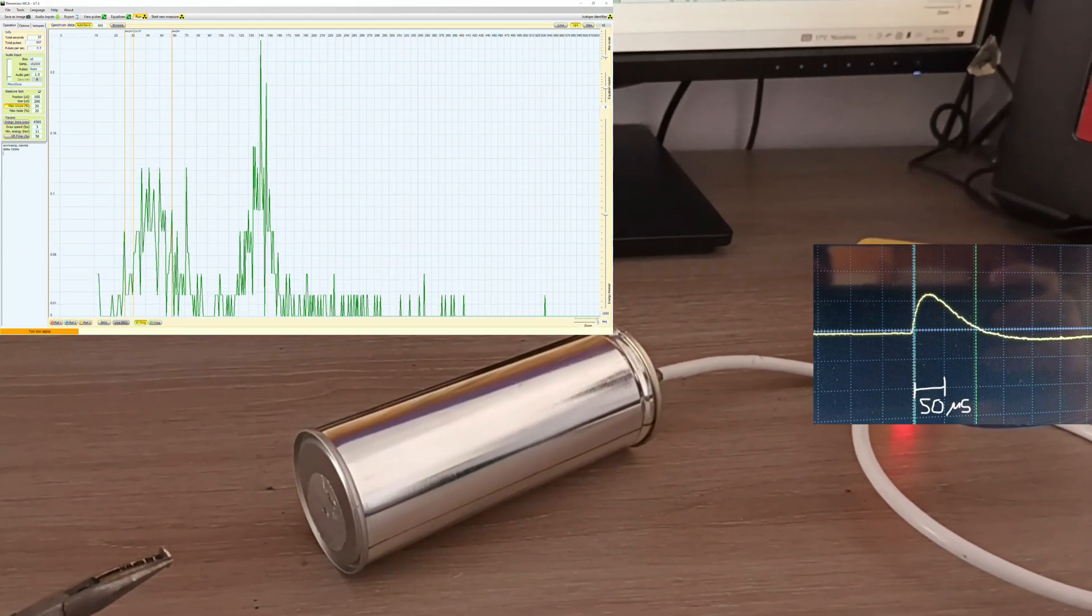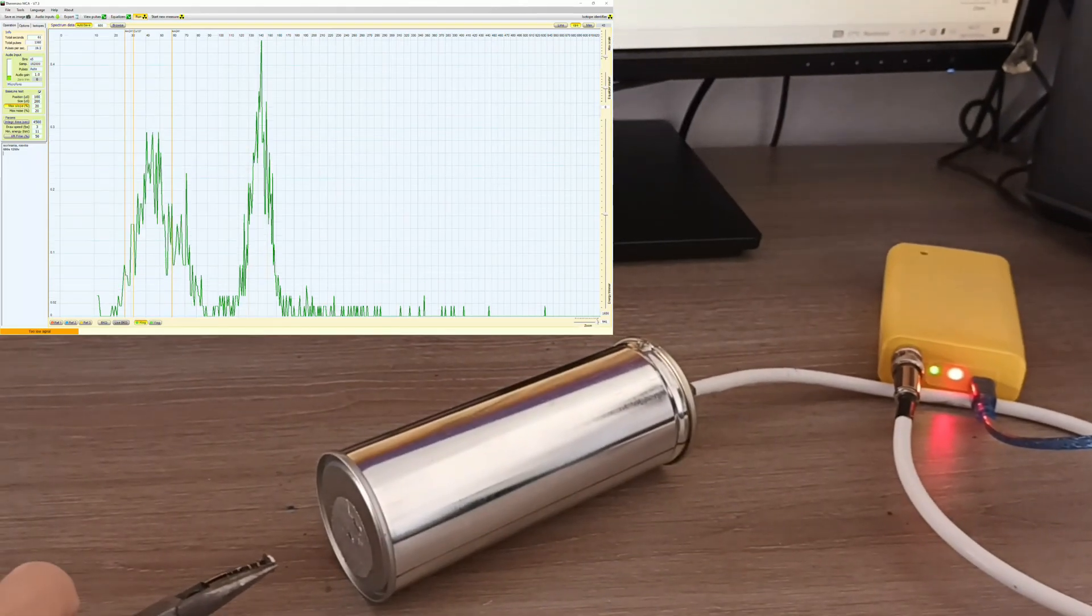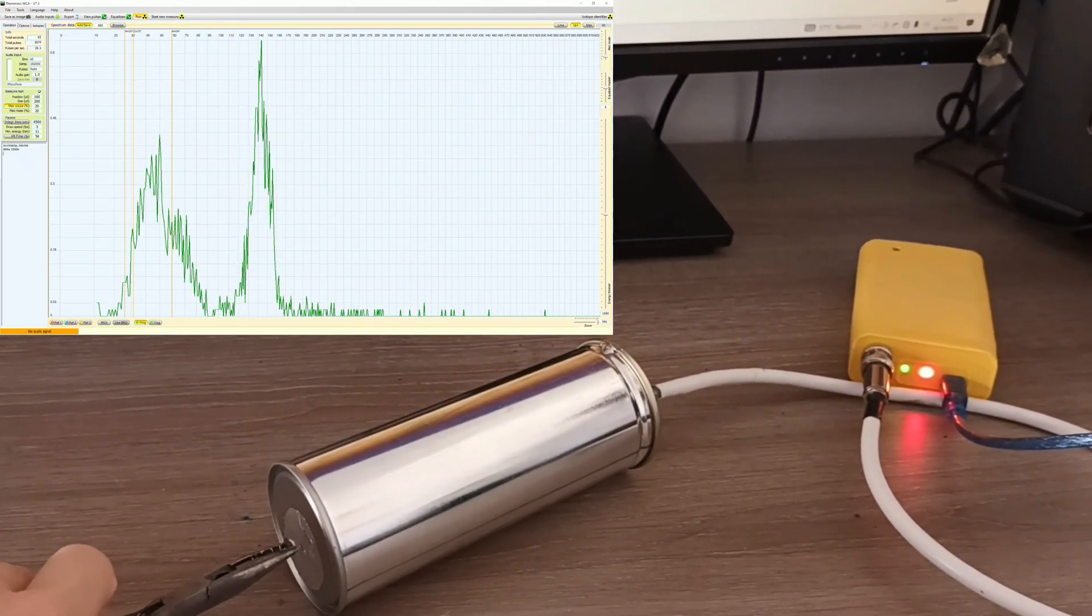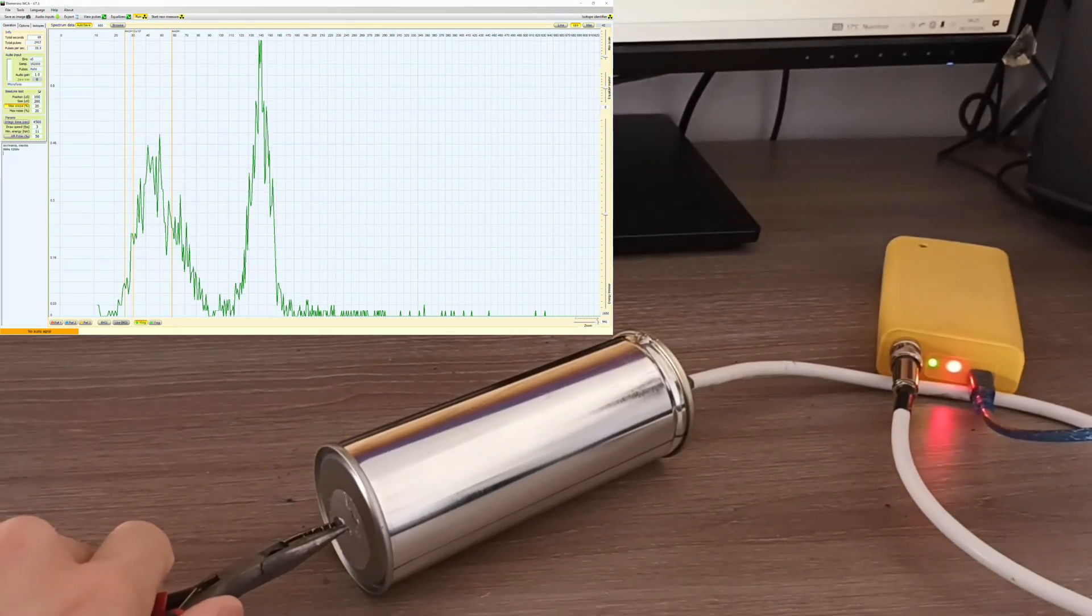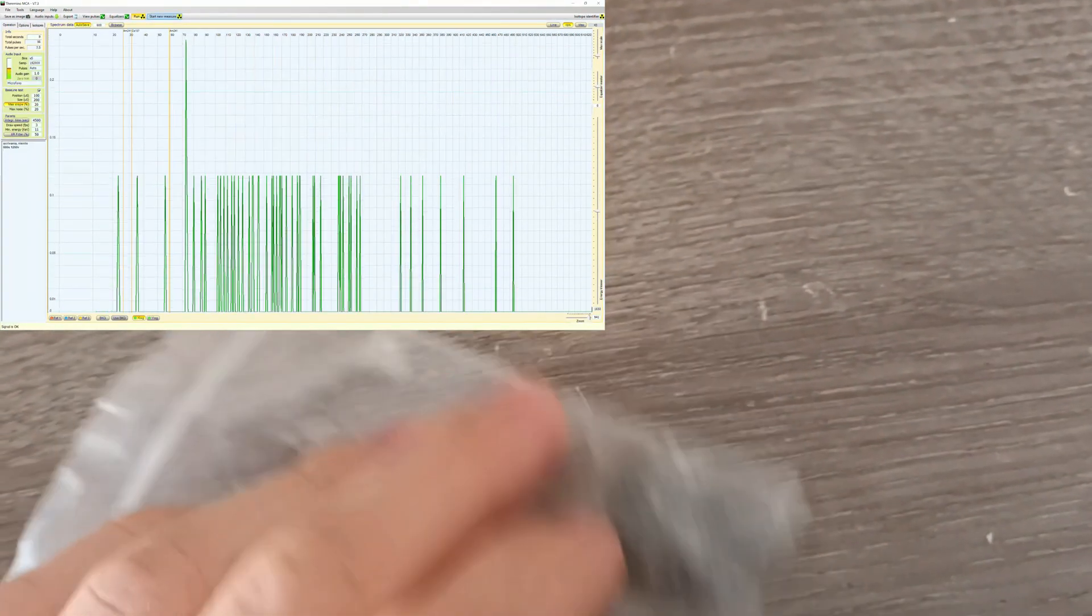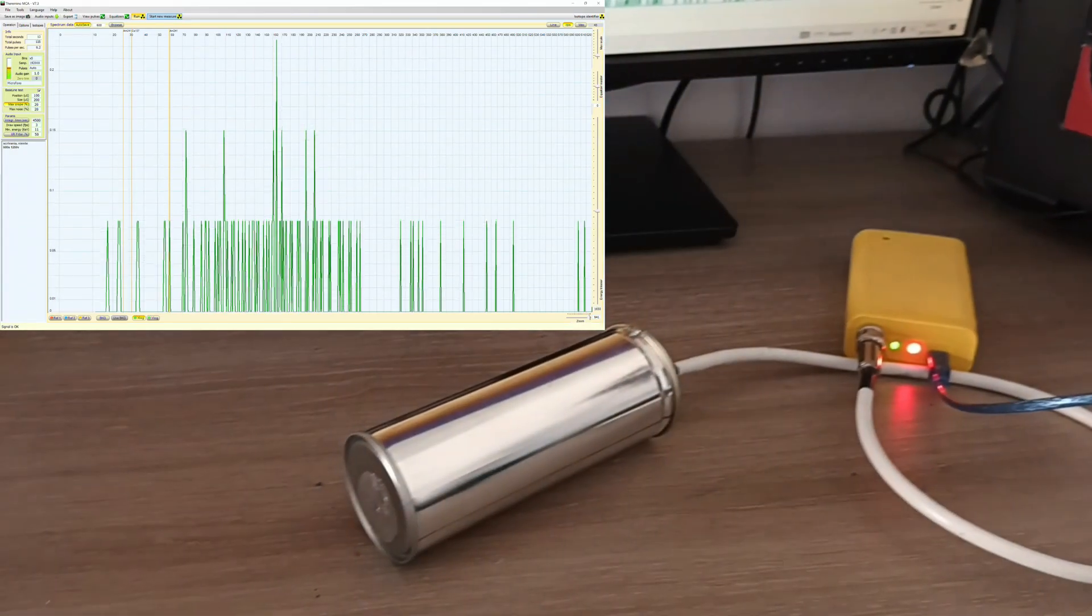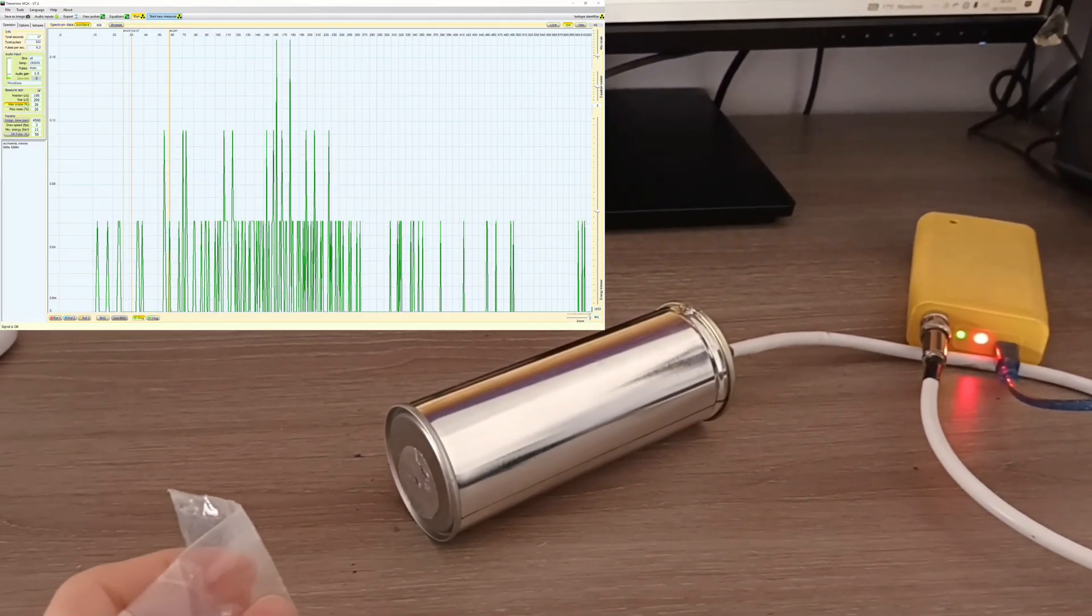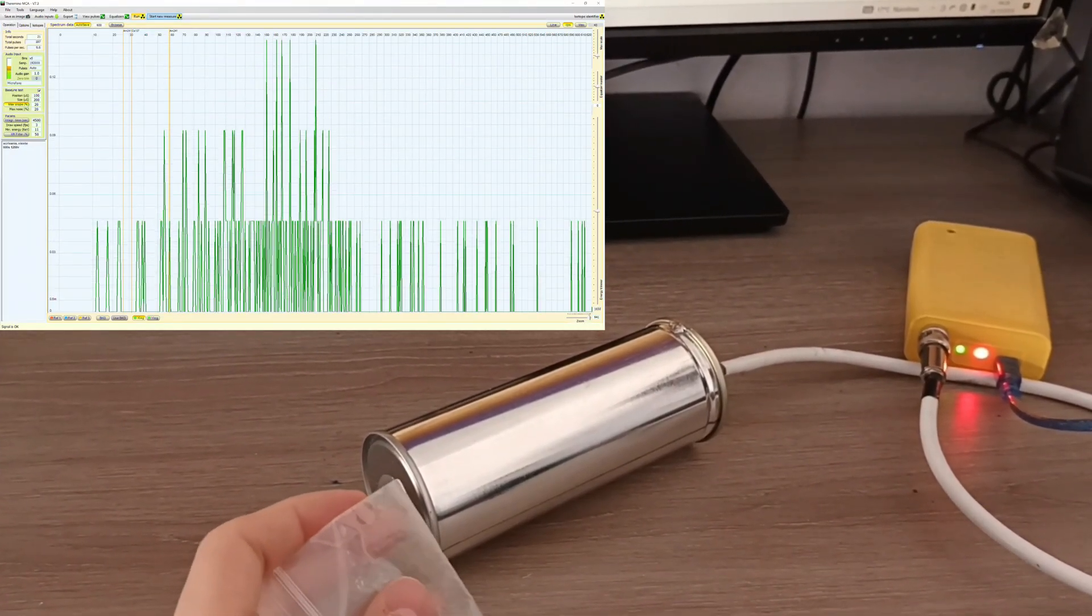Now you're hearing the radioactive photons interacting with the crystal and you can also see when I put it closer to the detector what happens. Now you can hear the difference between low energy gamma rays and higher energy coming from uranium. For example this is a pitchblende sample. You can hear that there are fewer pulses but stronger in volume.